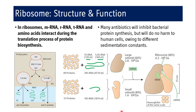So we can minimize the side effects of antibiotics targeted against ribosomal subunits in prokaryotes. For example, tetracycline inhibits protein biosynthesis by binding with the 30S subunit of the prokaryotic ribosome, affecting prokaryotic protein synthesis. It will not have a side effect on the eukaryotic ribosome because it does not match the eukaryotic subunit. That is the very important application: many antibiotics inhibit bacterial protein synthesis but will not harm human cells owing to different sedimentation constants.